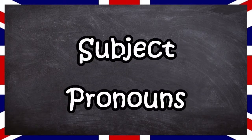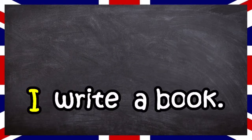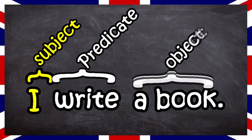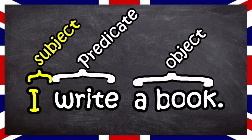Subject pronouns are always the subject of the sentence. They can only be left out if the subject of the sentence is expressed another way. In English, you always need to have a subject in the sentence. This is because English doesn't conjugate as much as other languages, so based on the verb, you can't decide whom you're speaking of.